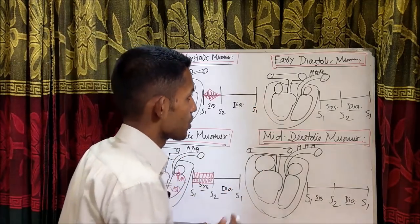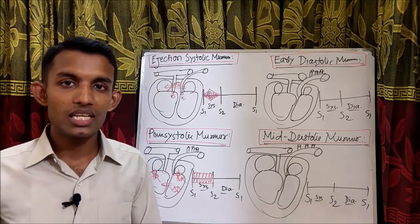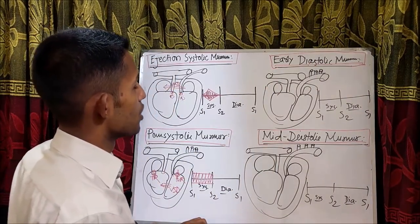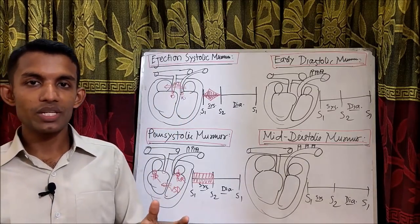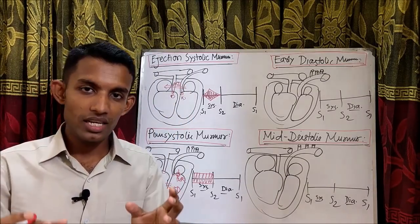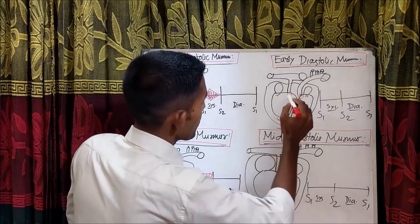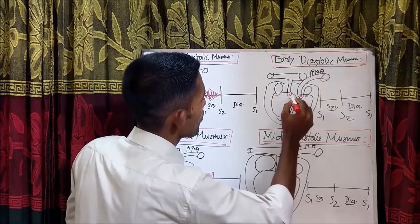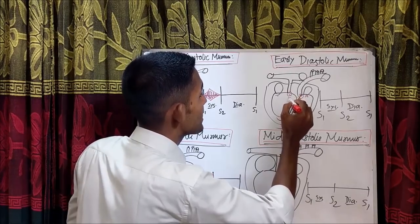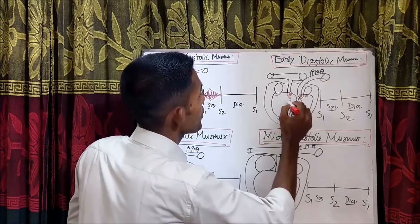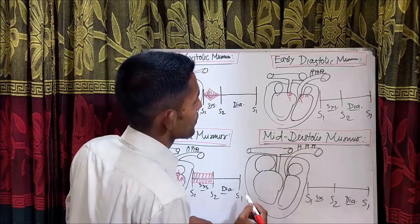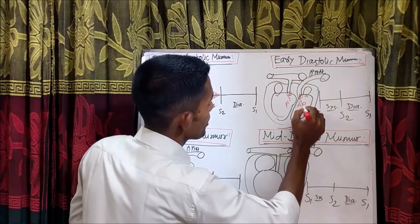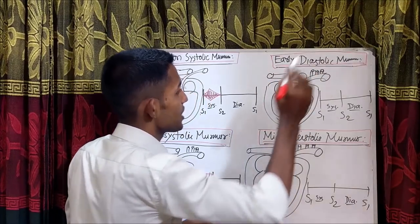Now, early diastolic murmur means murmur in early diastole due to leakage from normally closed valves during diastole. Diastole means relaxation of the heart — in diastole, the ventricles are filled. During diastole, the mitral valve and tricuspid valves are open through which ventricles are being filled, and the aortic valve and pulmonary valve are supposed to be closed — but now they are leaking. Due to that leaking, there is turbulence in early diastole. That is called early diastolic murmur. So in aortic regurgitation and pulmonary regurgitation, I will get early diastolic murmur.